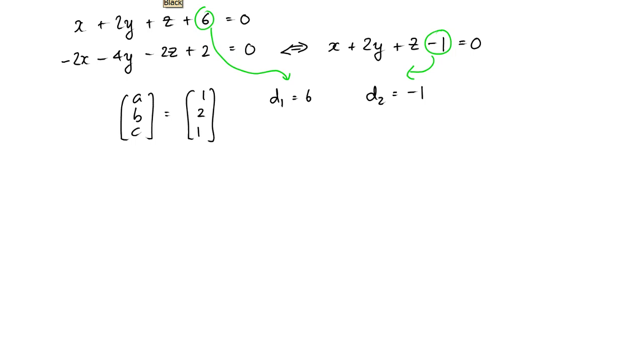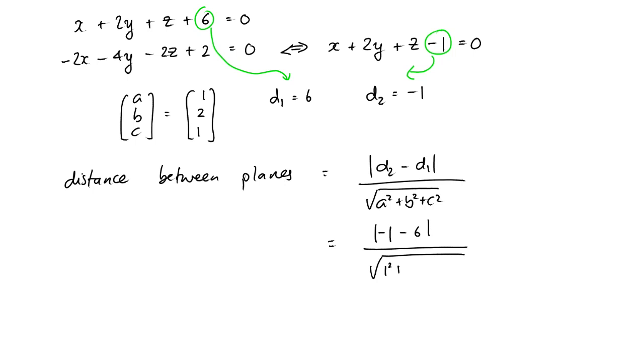Right, so the distance between these planes is simply then the absolute value of d2 minus d1 over square root a squared plus b squared plus c squared, which is equal to the absolute value of negative 1 minus 6, that's going to be 7, divided by the square root of 1 squared plus 2 squared plus 1 squared, which boils down to be 7 over root 6. And that's all there is to it. Thank you.